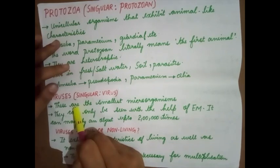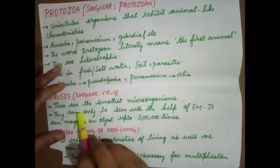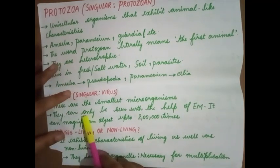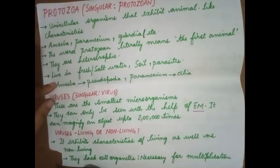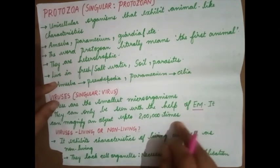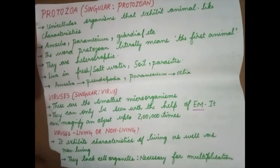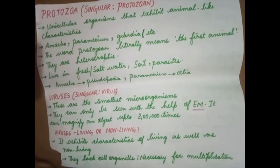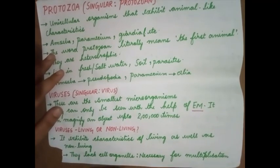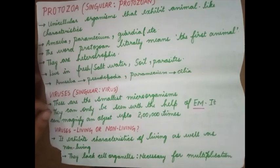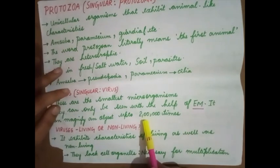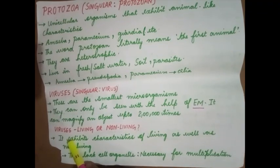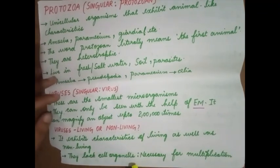Next we move on to viruses (singular: virus). These are the smallest microorganisms and can only be seen with the help of an electron microscope (EM). An electron microscope can magnify an object up to 2 lakh times. The microscopes found in school labs can magnify an object up to 40 times or 100 times the actual size, whereas an electron microscope can enlarge an organism up to 2 lakh times.